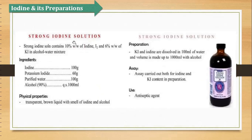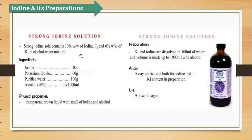Then is the strong iodine solution. Strong iodine solution mein 10% weight by weight of iodine lenge, aur 6% weight by weight of potassium iodide lenge. Quantities: 100 gram iodine, 60 gram potassium iodide, 100 gram purified water, and 90% alcohol. Yeh bhi transparent brown liquid hai with the smell of iodine and alcohol. Preparation: saari quantities mix kar do, solution ban jayega. Used as antiseptic agent.